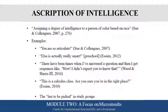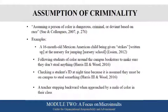We also find that men of color are the last to be picked for group work, or in many cases not picked at all. Regarding criminality: our men of color and students of color in general are assumed to be dangerous, deviant, up to no good. An example in preschool: a 16-month-old Mexican-American child being given strikes and written up at the nursery for jumping — which is developmentally appropriate for a 16-month-old. Following students of color around the campus bookstore assuming they'll steal. Checking a student's ID at nighttime because it's assumed they must be on campus to steal something. A teacher stepping backwards because a male of color is in their class.